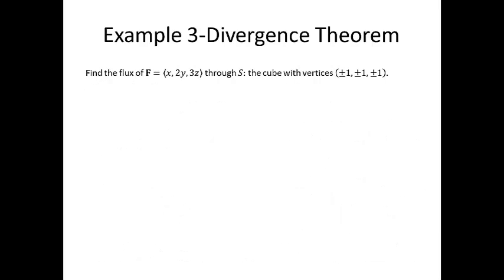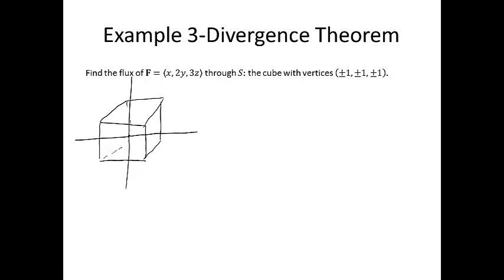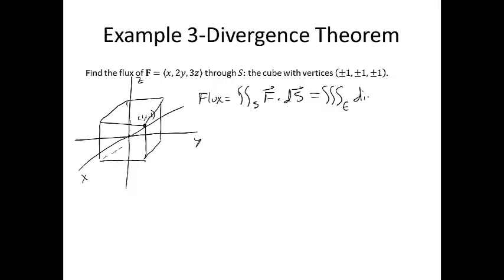Example 3 asks us to find the flux of F through the surface S, the cube with vertices at plus or minus 1, plus or minus 1, plus or minus 1. The axes go right through the middle of the cube. S is made up of six pieces corresponding to the six sides, so calculating the surface integral directly would require six surface integrals added together. But the divergence theorem lets us instead do the triple integral over the solid region bounded by the cube of the divergence of the vector field.